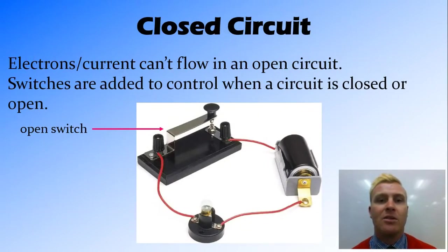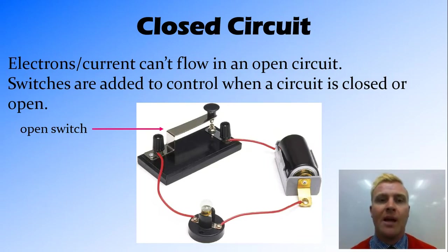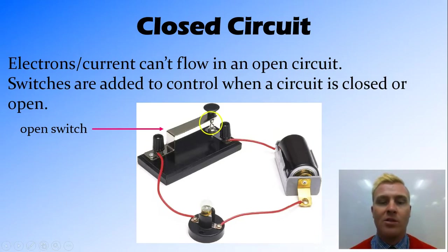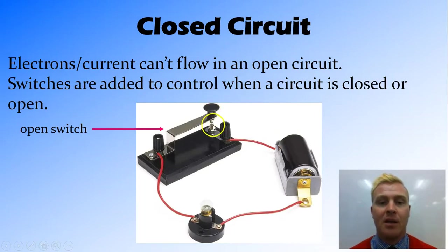And finally, we need a closed circuit. A closed circuit means that we have conductors, usually metal, that are connecting each component up to each other so that there is a path for the electrons to flow through. We use switches to open this circuit. Here you can see this switch — this is a tap switch, so you press down on it, and there are two terminals. When this switch is open, there's a gap between these two terminals, making it an open circuit, so electrons are unable to move around. But once you press down on this button, those two terminals touch each other, closing the circuit and allowing those electrons to flow.